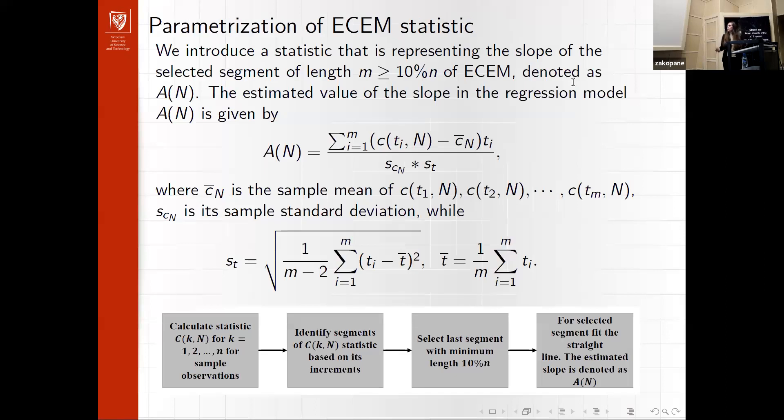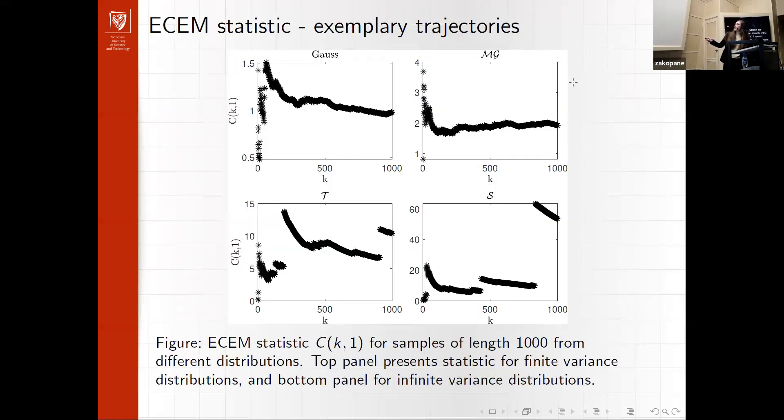So how we decided to parameterize the statistic? We used exactly this property that we usually observe those jumps, and based on those jumps, we are segmenting the trajectory of the statistics, and then we are fitting the slope of those segments.